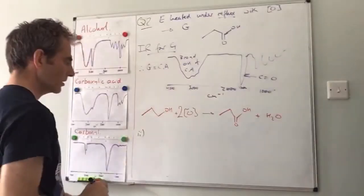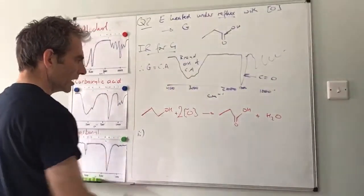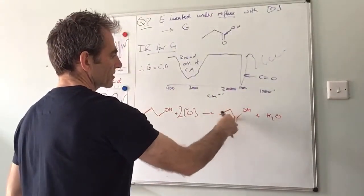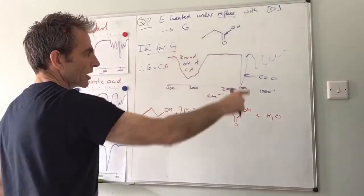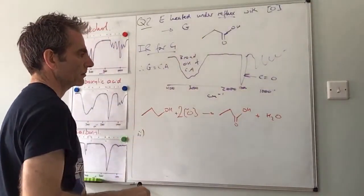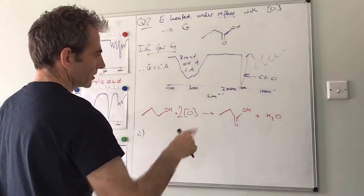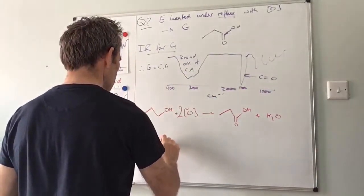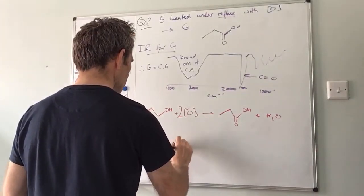So that was that. It said G reacted with F, which was the secondary alcohol, heated in the presence of concentrated sulfuric acid. Right. So carboxylic acid.